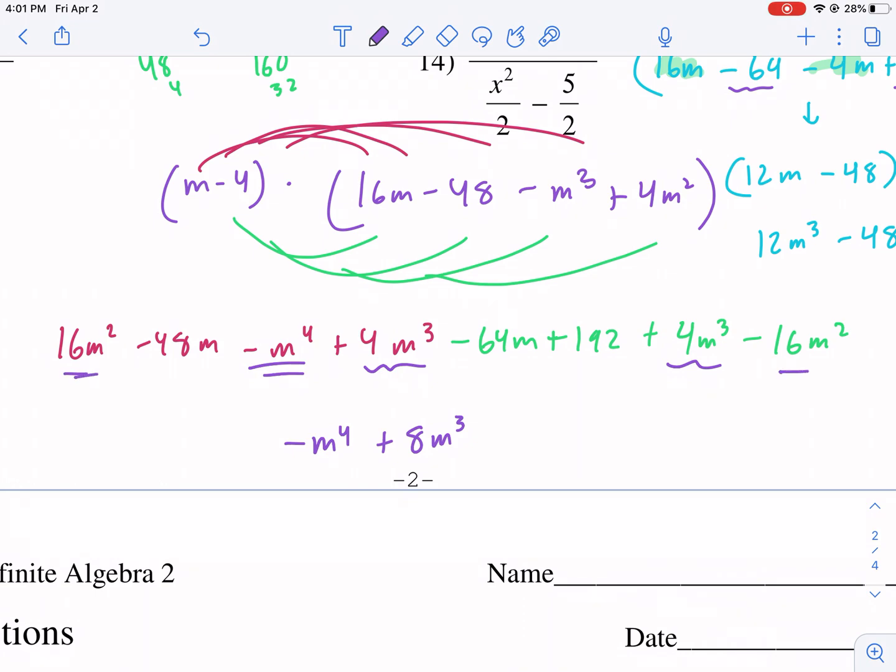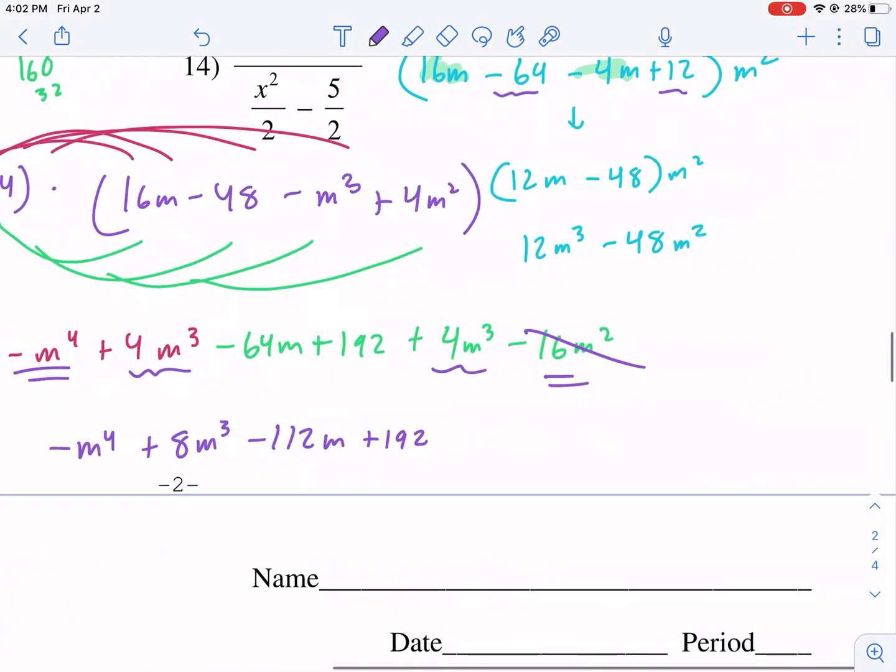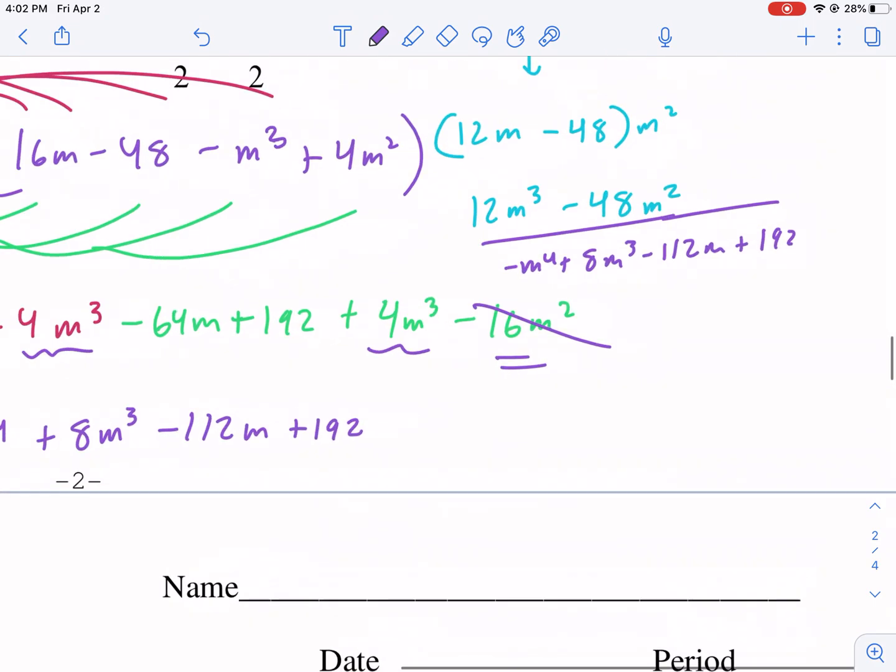Let's go m squared. Here's m squared, m squared. They're going to cancel away conveniently. Then we're going to have a negative 48m and a positive or negative 64m. That's going to give us negative 112m. And then I think there's only the 192 left. I don't think there's any other numbers. So plus 192. So that's going to be our denominator. Negative m fourth plus 8m cubed minus 112m plus 192. And that's our denominator.